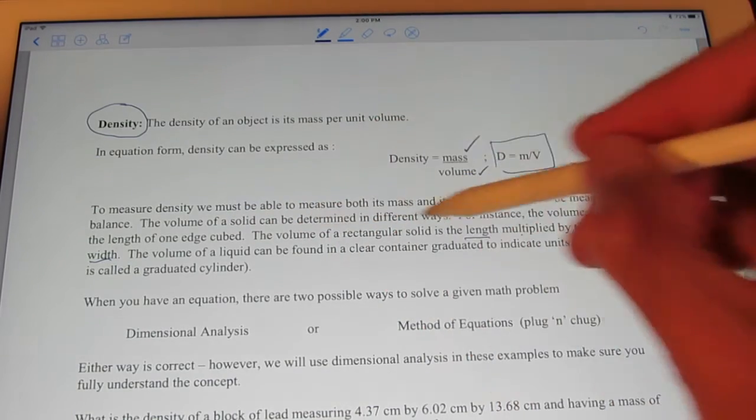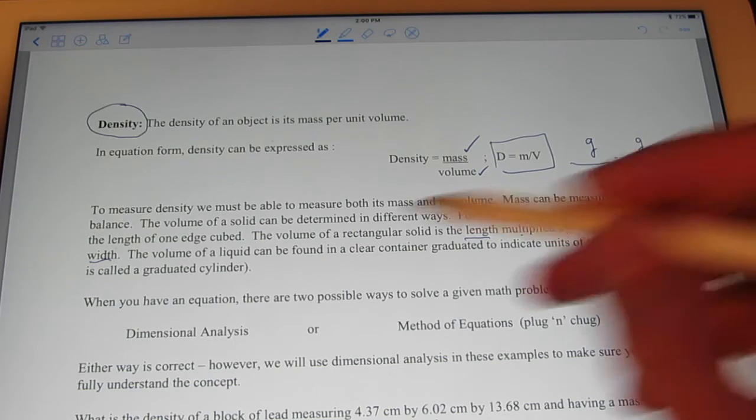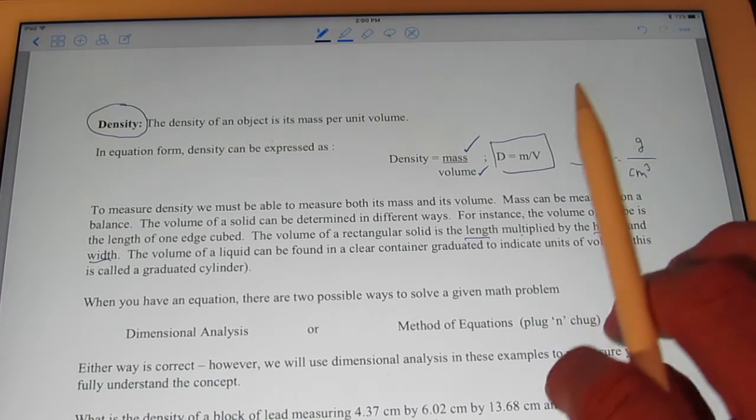And the volume of a liquid can be found in a clear container graduated to indicate units of volume. These are called graduated cylinders. And in our lab coming up, we will find the volume using all three of these methods.